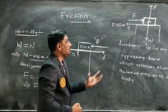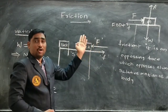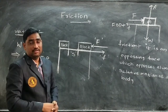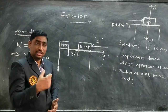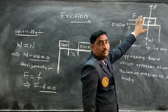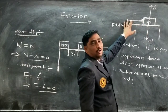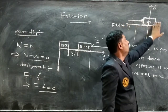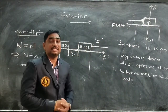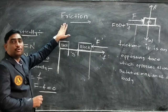So dear friends, from this, what we can conclude is that along the vertical direction and as well as along the horizontal direction, there are four forces acting, but the net force must be equal to zero. That block neither moves up along the vertical direction, nor moves down, nor moves to the right side along the horizontal direction, nor moves to the left side. Then the state of the block is said to be the state of equilibrium. So this is the way to understand about the force of friction.